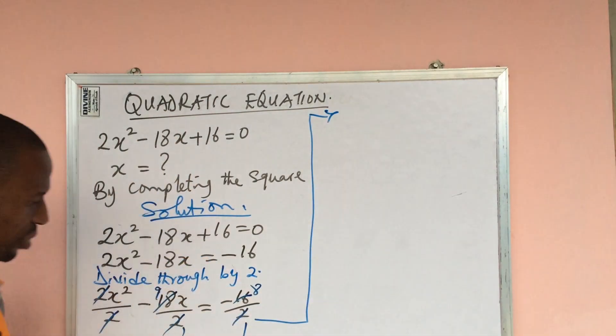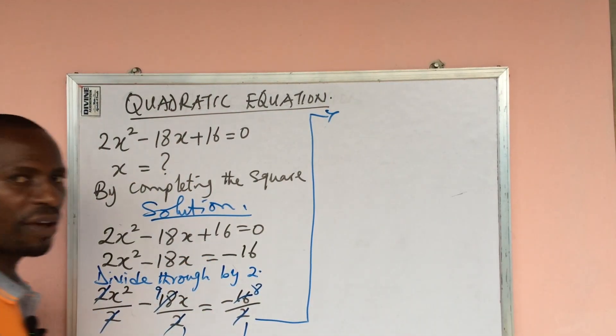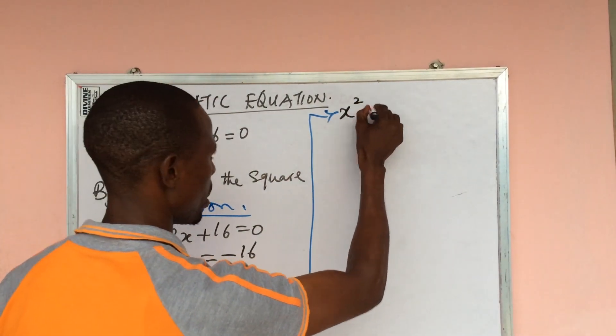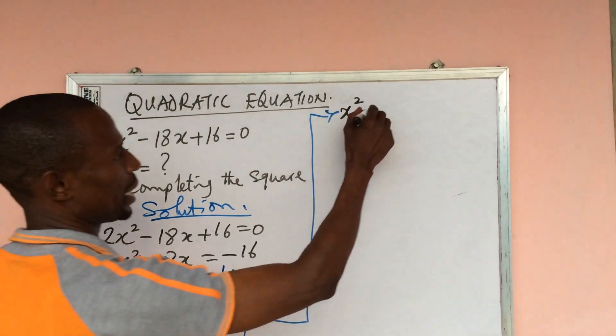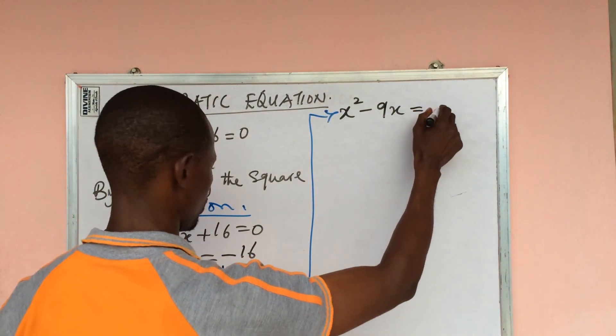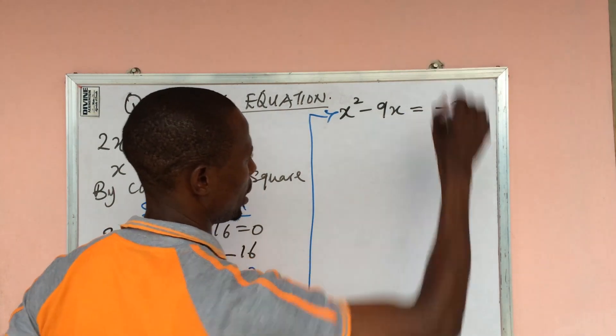From here let's proceed. The coefficient of x² will now give us x² - 9x = -8.